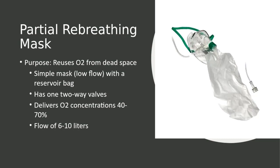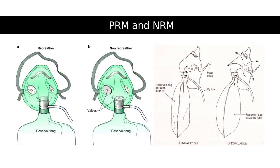The partial rebreather mask is a high flow delivery device. It can deliver up to 70% of oxygen.